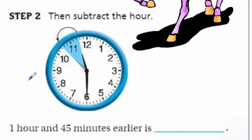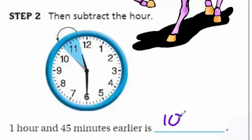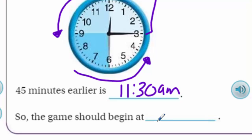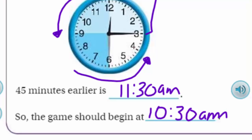Step two: subtract the hour. We already handled the three-quarters hour, so now subtract one hour. If we had 11:30 and go one hour earlier, that's really easy - that's 10:30 AM. So the game should begin at 10:30 AM!